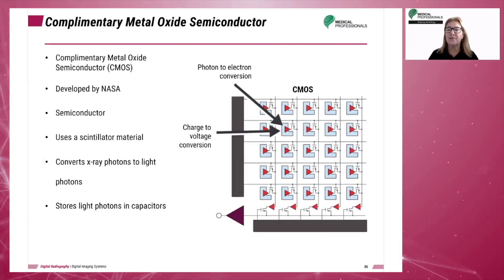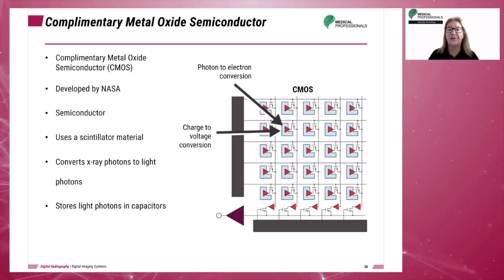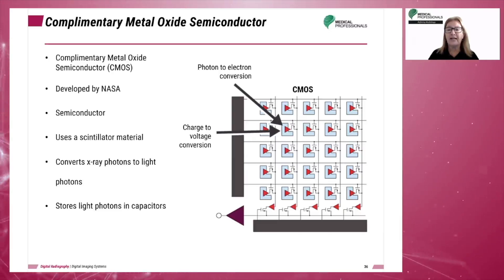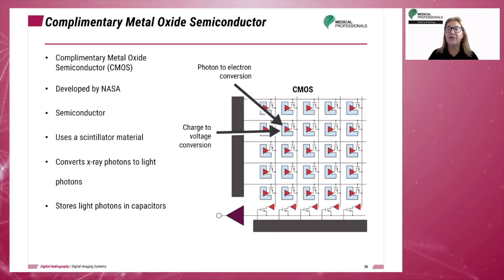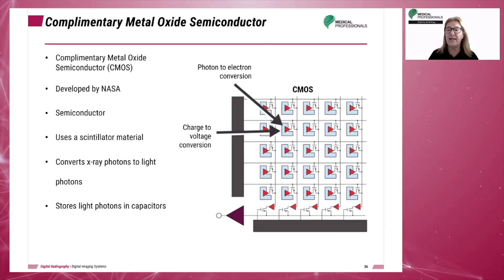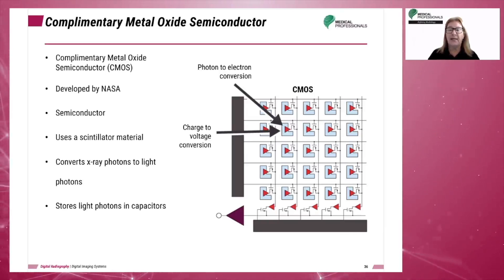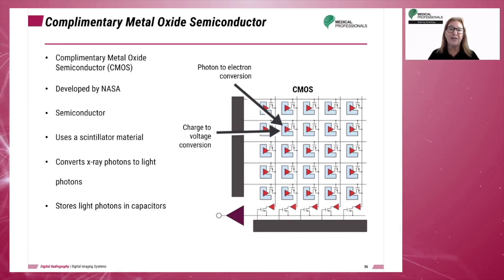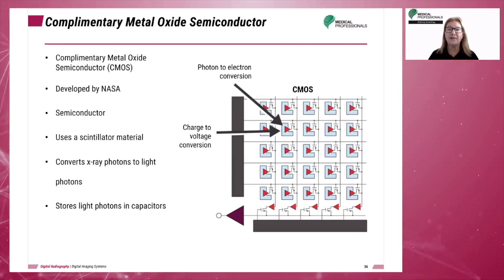CMOS systems were developed by NASA. Similar to CCDs, they need a scintillator material. A semiconductor is a solid chemical element or compound that conducts electricity under some conditions. When X-ray photons strike the scintillator, they are converted into light photons and stored in capacitors. Each detector element (DEL) in the system has its own amplifier, switched on and off by circuitry in the DEL, converting light photons into electrical charges that are sent to the analog-to-digital converter and then processed by the computer.